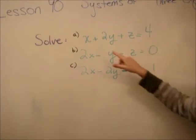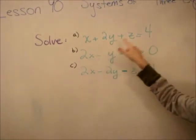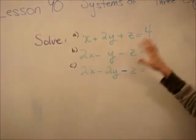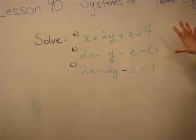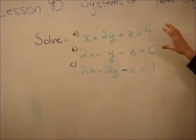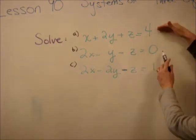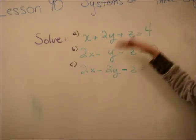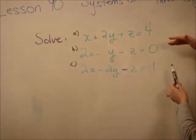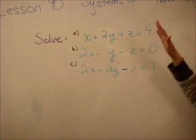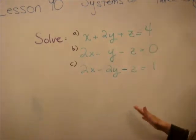Whatever we find for x, y, and z will make all of these true. This is very similar to when we did solving two equations with two unknowns. What we're going to do is take two equations, eliminate a variable, and then take two other equations and eliminate the same variable.